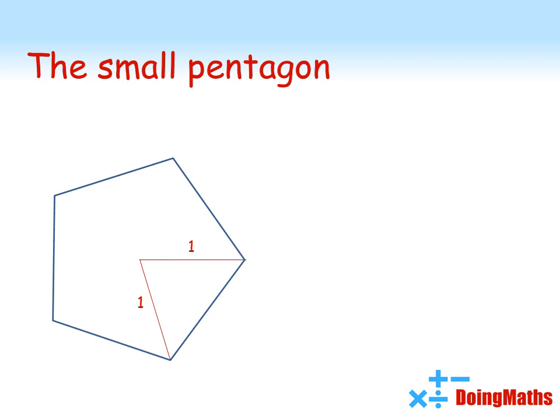Now the area of a triangle with two sides given can be found using a half AB sine theta, where theta is the angle in between the two sides A and B. Well, we can see that there are five of those triangles inside the pentagon. So that angle must be 72 degrees. So the area of the triangle must be a half times 1 times 1 times sine 72. So the area of the whole pentagon must be 5 lots of that, giving us an area of 2.378.